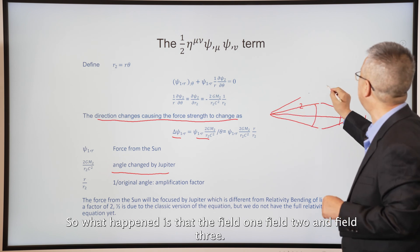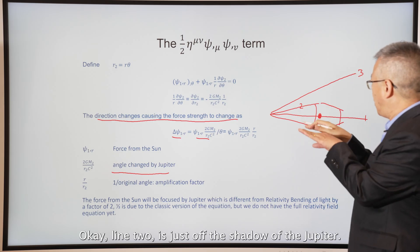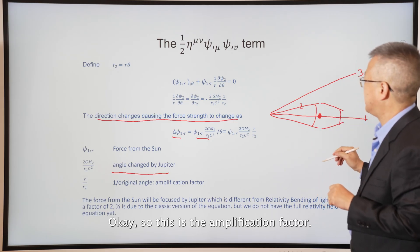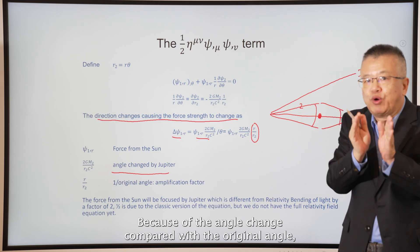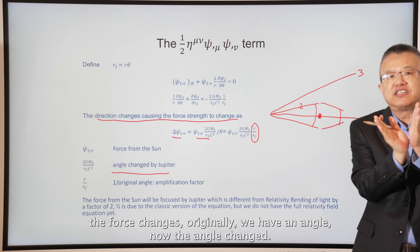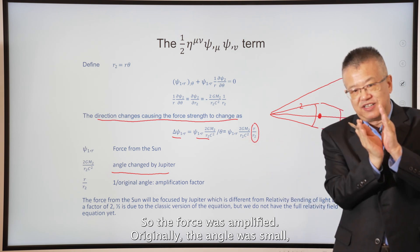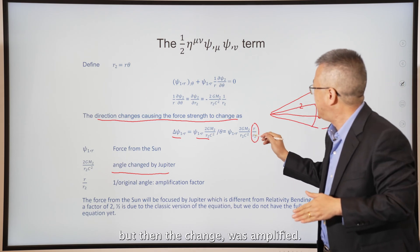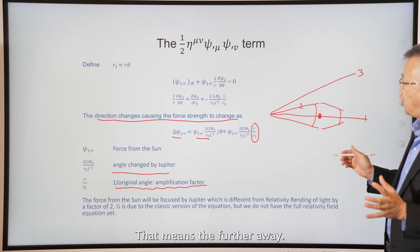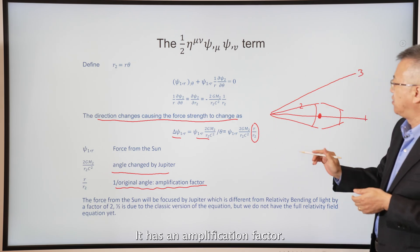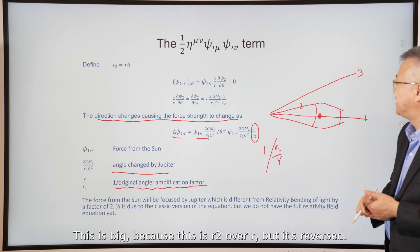Field three, being so far from Jupiter, doesn't change. Field two, just off Jupiter's shadow, is changed. This is the amplification factor due to the angle change compared with the original angle. The force is amplified because the original angle is small but the change is significant — the amplification factor is r2 over r, which can be large.